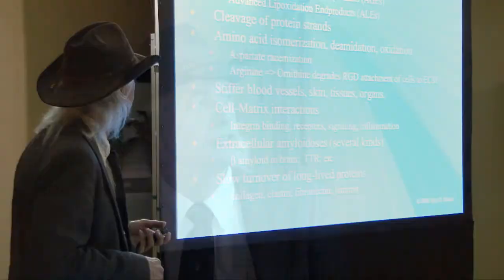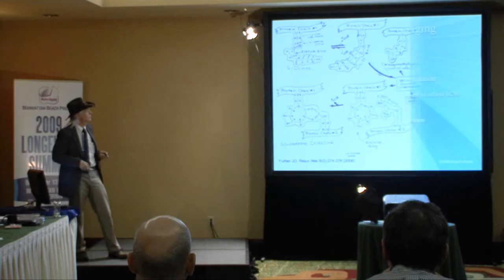The consequences include stiffer blood vessels, skin, tissues, and organs. There are also cell-matrix interactions, integrin binding receptors, and signaling inflammation. You get beta-amyloids accumulating in the brain, and as Stephen Coles mentioned, TTR accumulating in other tissues, along with slow turnover of the long-lived proteins.